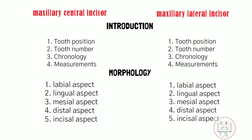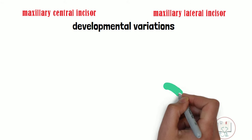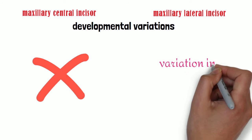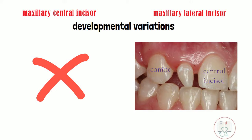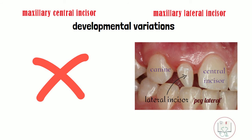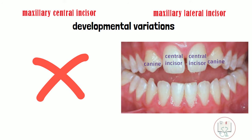Apart from all these differences, the lateral incisor shows a lot of developmental variations not seen in the central incisor. The crown shape of the lateral incisor varies in its form more than any other tooth in the mouth except the third molar. For example, it commonly appears like a conical tubercle, known as the peg lateral. Lateral incisors are also one of the most commonly congenitally missing teeth in the mouth, second only to third molars.